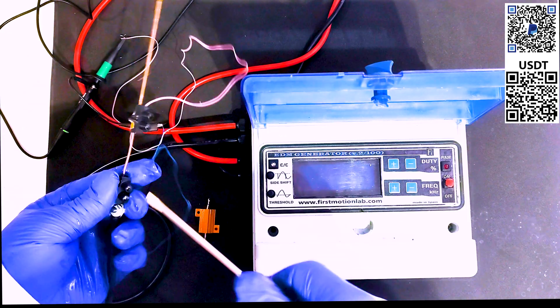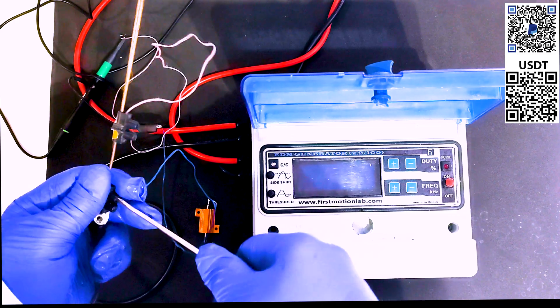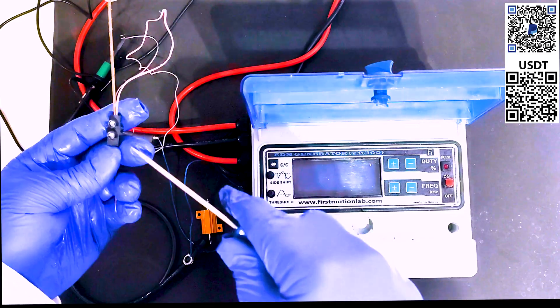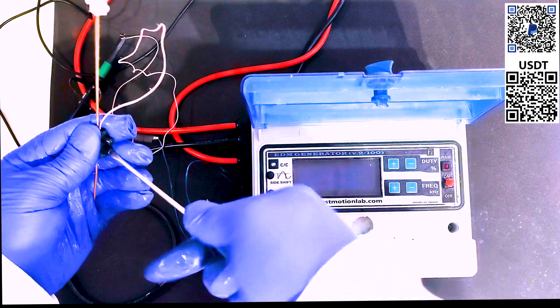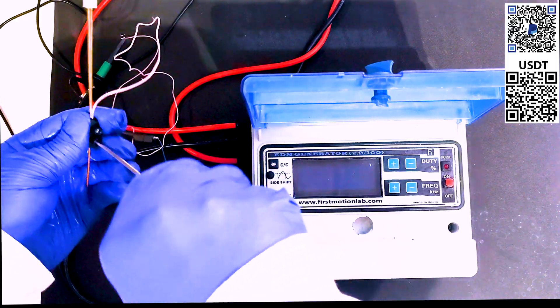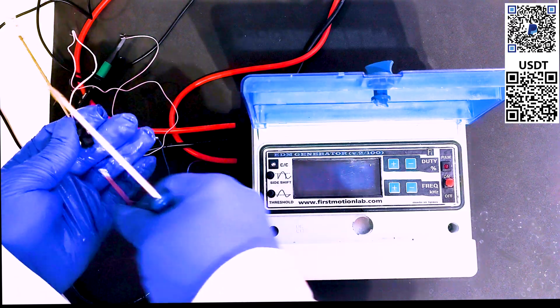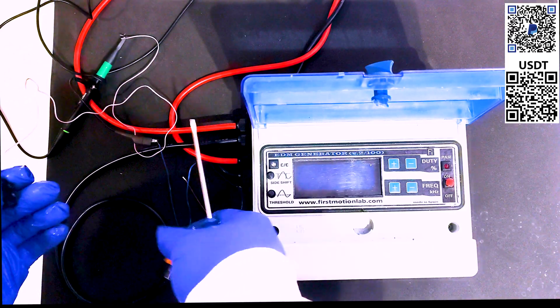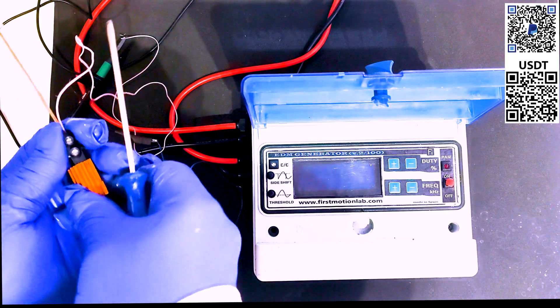Now we unmount the manganin alloy wire and we will connect the resistor with 25 watts and 0.1 ohm and look at the pulses with it.